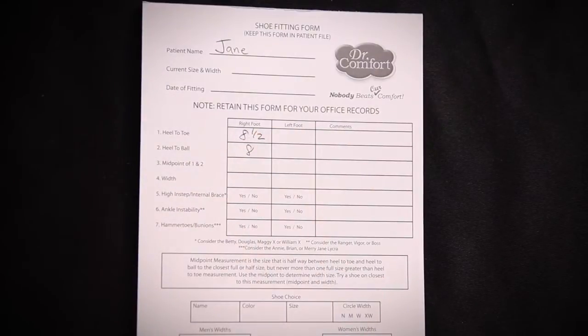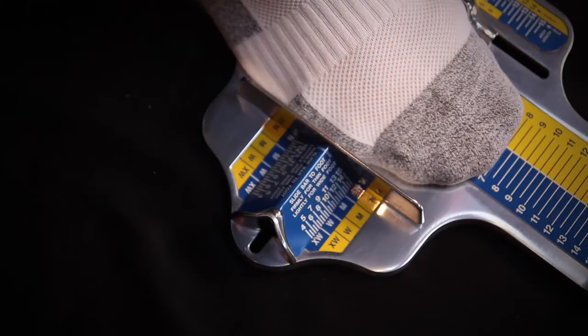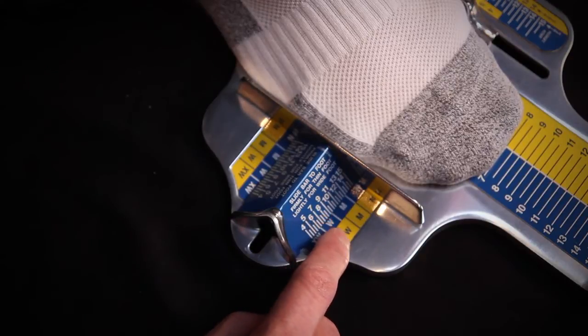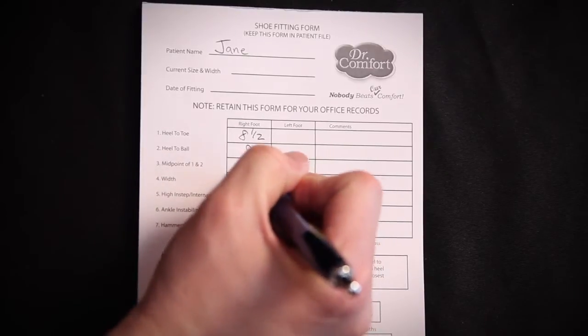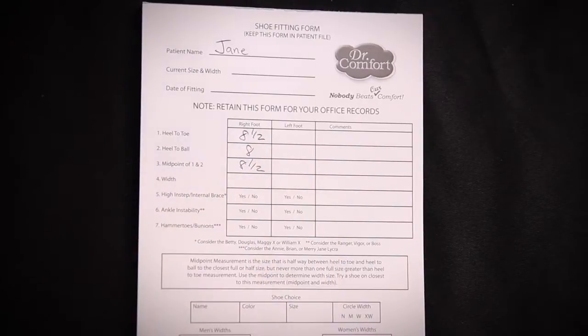The next is a midpoint measurement of taking the difference between the two, which is an 8 1/2. I use the 8 1/2 to indicate the width on Jane's foot. In this case, it indicates that Jane is an 8 1/2 wide.